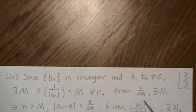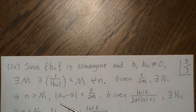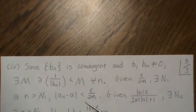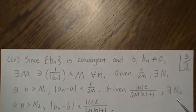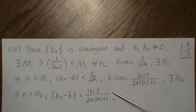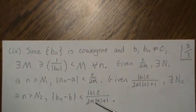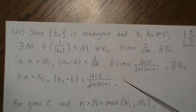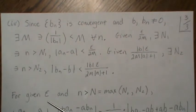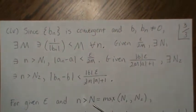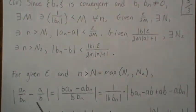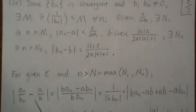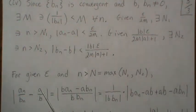Given epsilon over 2M, there exists an N1 such that for all n greater than N1, |An − A| satisfies the required inequality, because the An's are convergent. Similarly, given a corresponding number involving epsilon, M, A, and B, there exists an N2 such that for all n greater than N2, |Bn − B| is less than that number — no matter how small it gets — because Bn is a convergent sequence. So given epsilon and n greater than N, which is the maximum of N1 and N2, we look at the difference |An/Bn − A/B| and want it to be less than epsilon.